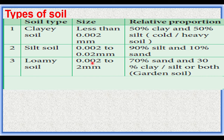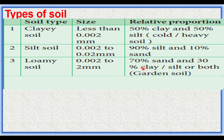Loamy soil has a particle size ranging between 0.002 to 2 mm. It is composed of 70% sand and 30% clay or silt. This soil holds water — it has good water holding capacity with no water logging or stagnation — and it also has a good amount of decomposing matter.